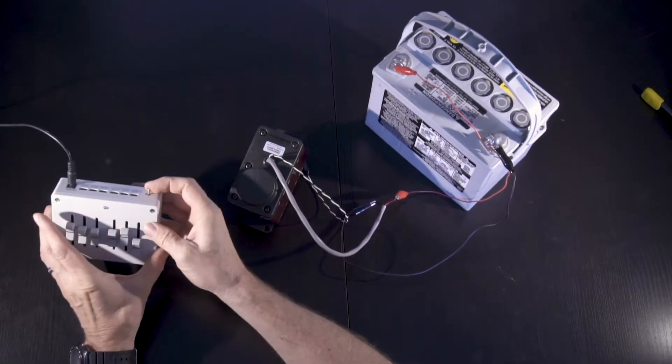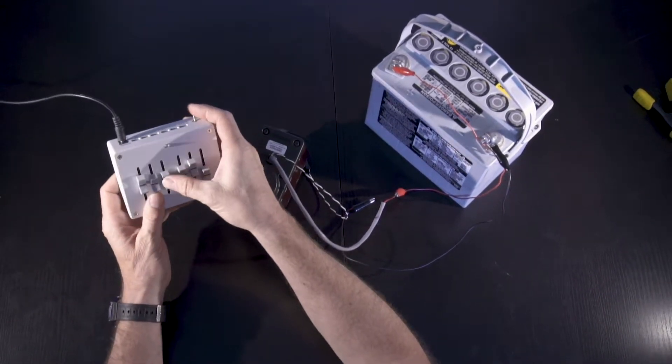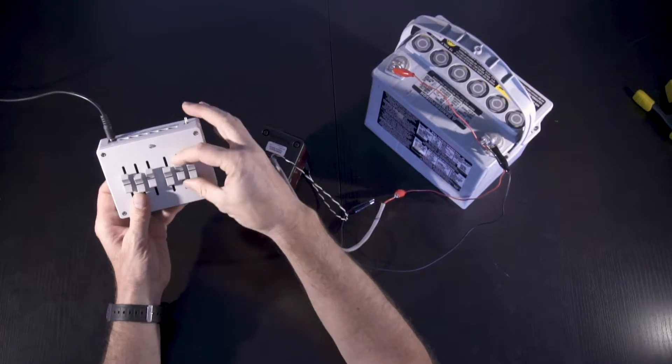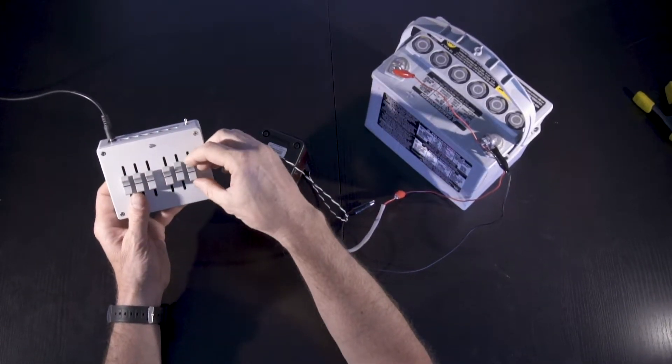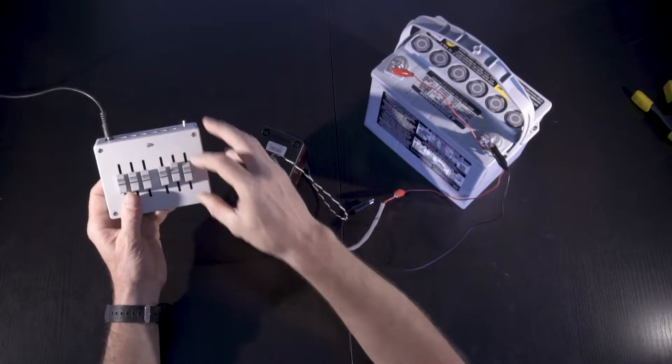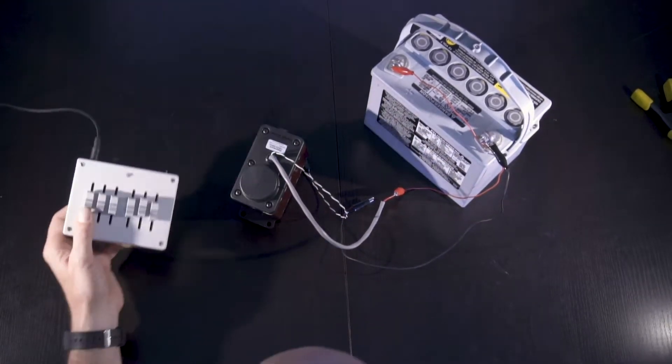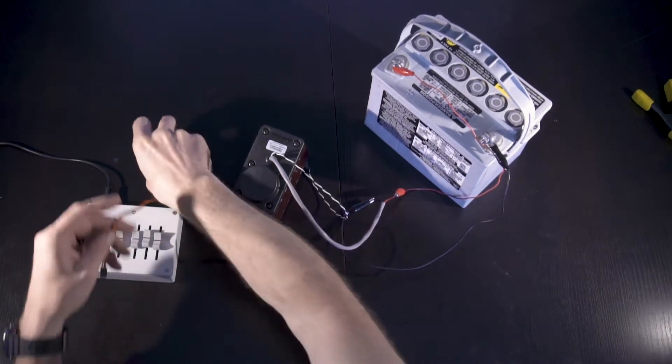So we'll flip on this box. This box is also a Gearworks product. It's a six channel slider controller. The advantage of something like this, it works really good as a test box because you can slide the servo to a position.